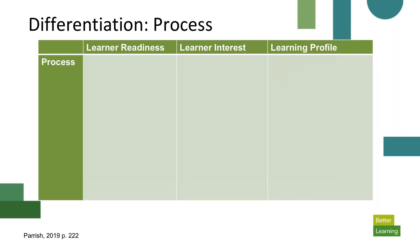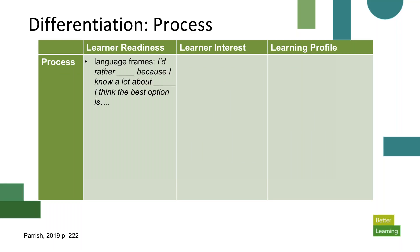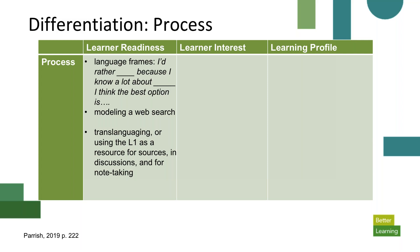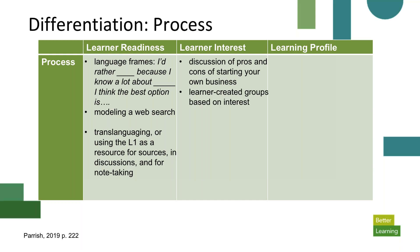Let's think about process now. We might need to give students language frames to engage with the activities. Remember, process is the ways that we teach. We might model doing a web search for this activity. I also think this is a great chance to use translanguaging — leveraging the first language as a resource — so students could explore content in their own language, do note-taking in their first language, and then create their poster or PowerPoint in English. For interest, we can look at the pros and cons of starting a small business, or pros and cons of a particular major, and learners can create groups based on their common interests.